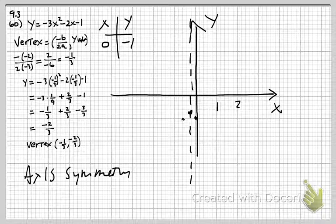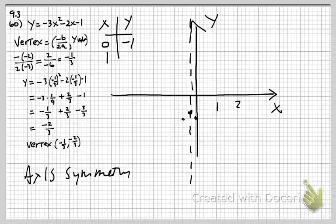Next, my input is going to be 1 for x, because that looks a little easier to do the math on. So I'm going to have 1 squared times negative 3, that's negative 3. Then negative 2 times 1 is negative 2. So negative 3 plus negative 2 is negative 5, minus 1 is negative 6. So I have the point (1, negative 6). I'll go to 1 on the x and count down — 1, 2, 3, 4, 5 — and I'm already coming way down off my graph.